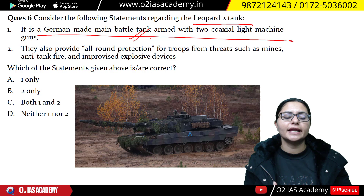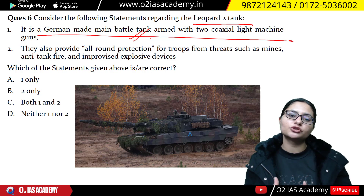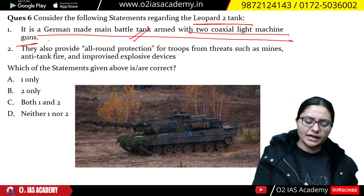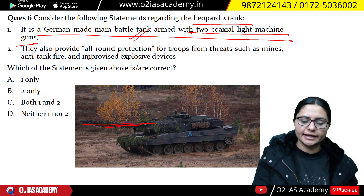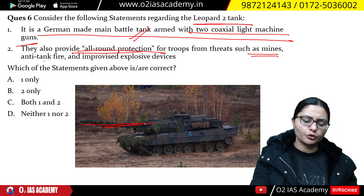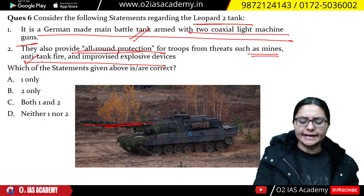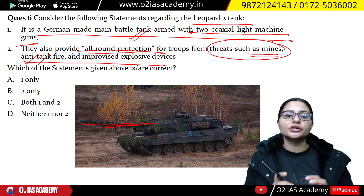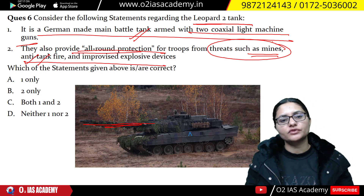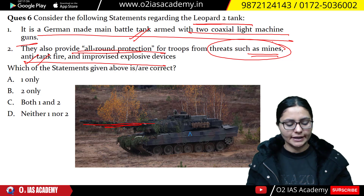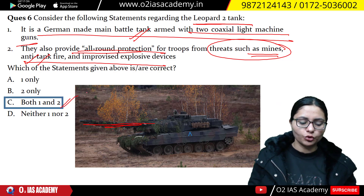The Leopard 2 tank has two co-axial light machine guns loaded, and provides all-round protection. This tank protects from different threats, including anti-tank fire. Germany provided these tanks to Ukraine as it was in the news. You should know which country manufactures it. The answer is both statements one and two are correct.